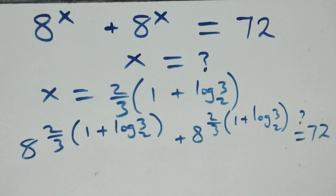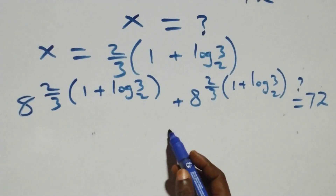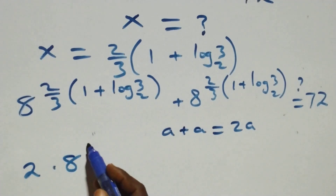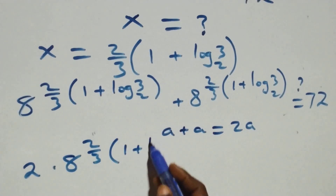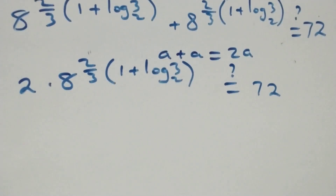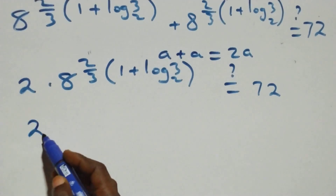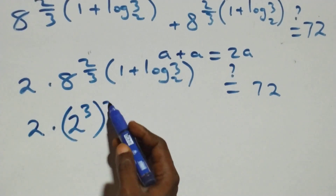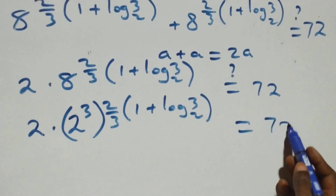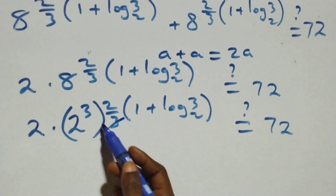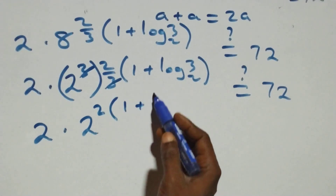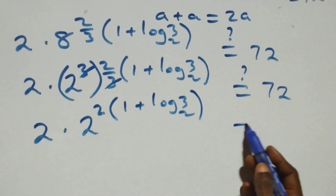We add the same things together: a plus a equals 2a. So this becomes 2 times 8 raised to power [2 over 3 times (1 plus log 3 base 2)] equals 72. We can express 8 as 2 cubed, giving 2 times 2 cubed raised to power [2 over 3 times (1 plus log 3 base 2)]. The power 2/3 and the cube 3 cancel, leaving 2 times 2 raised to power 2 times (1 plus log 3 base 2). Expanding: 2 times 2 raised to power (2 plus 2 log 3 base 2) equals 72.